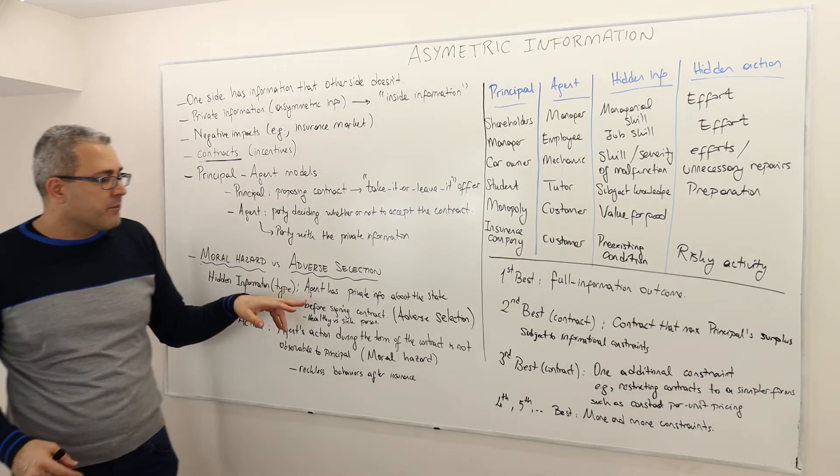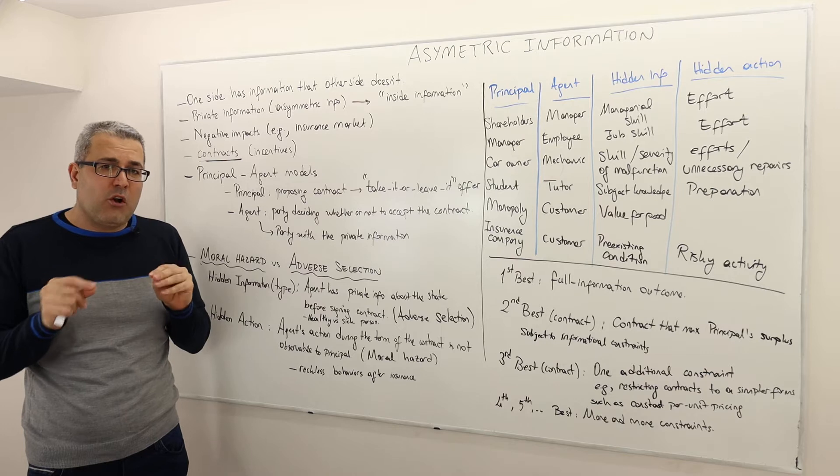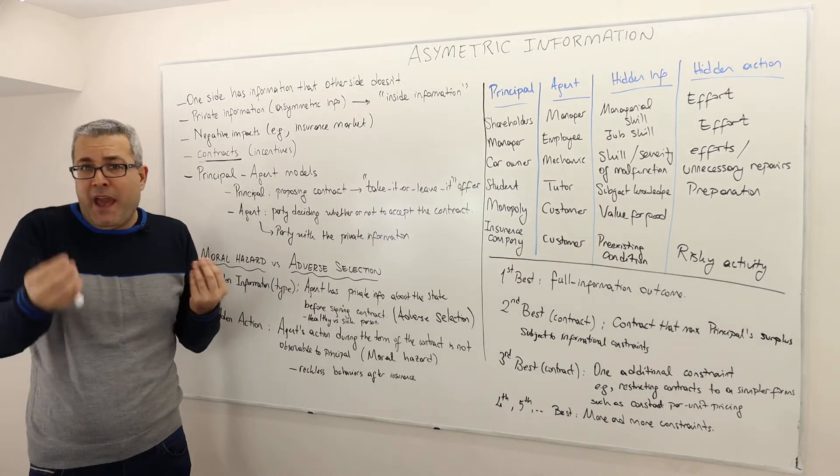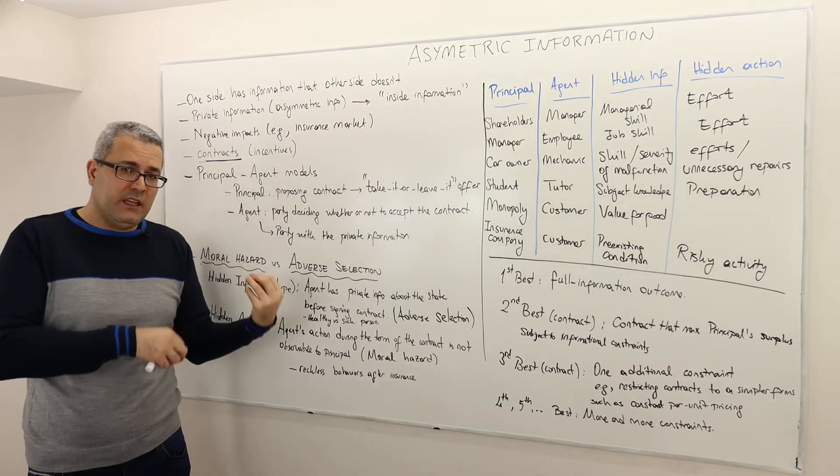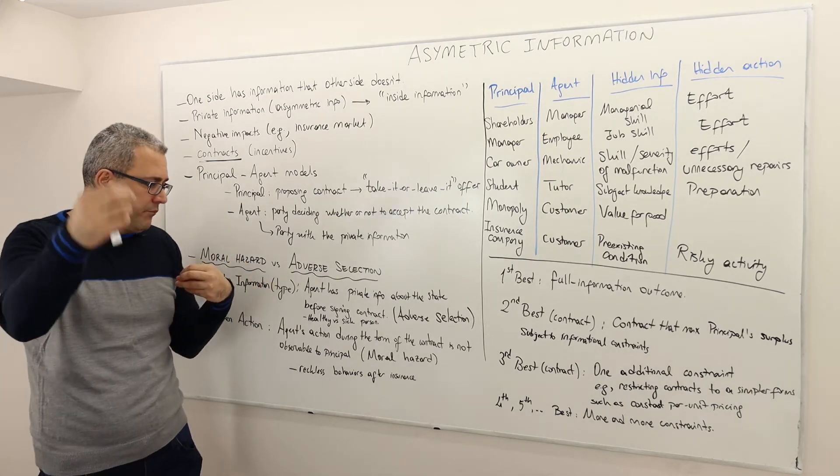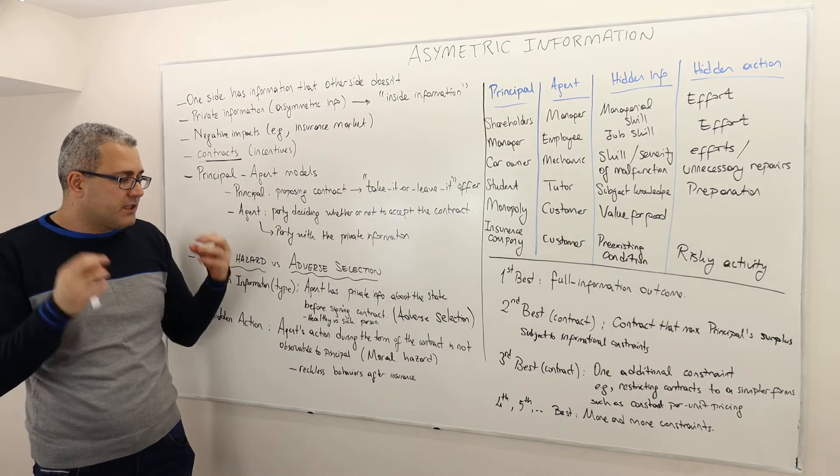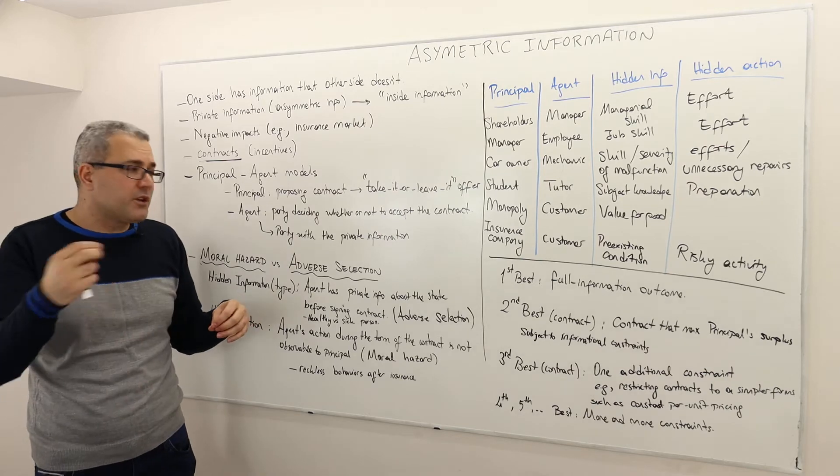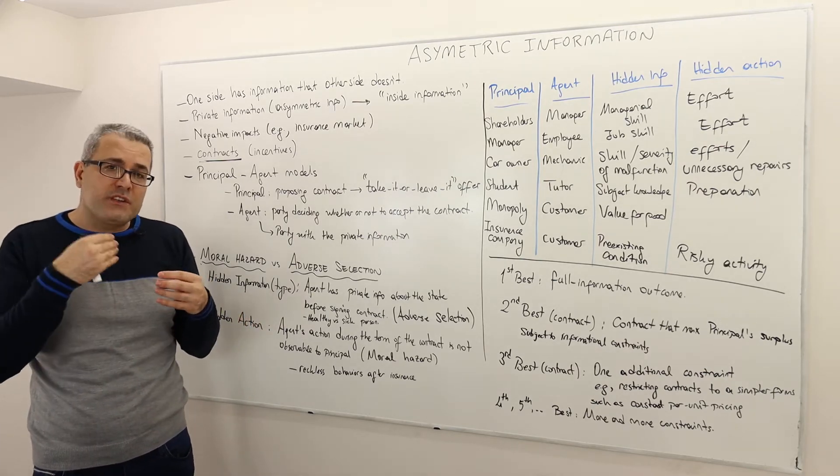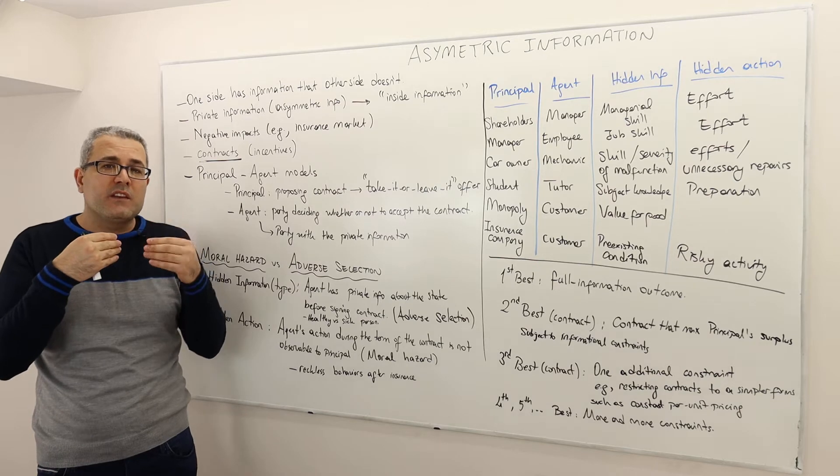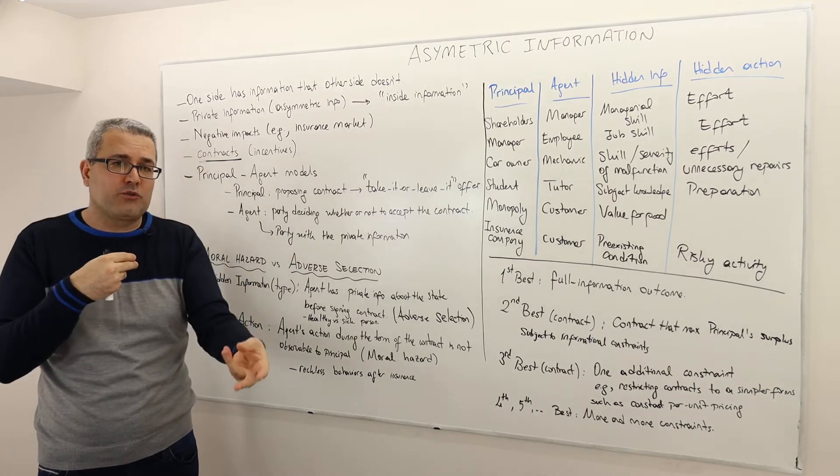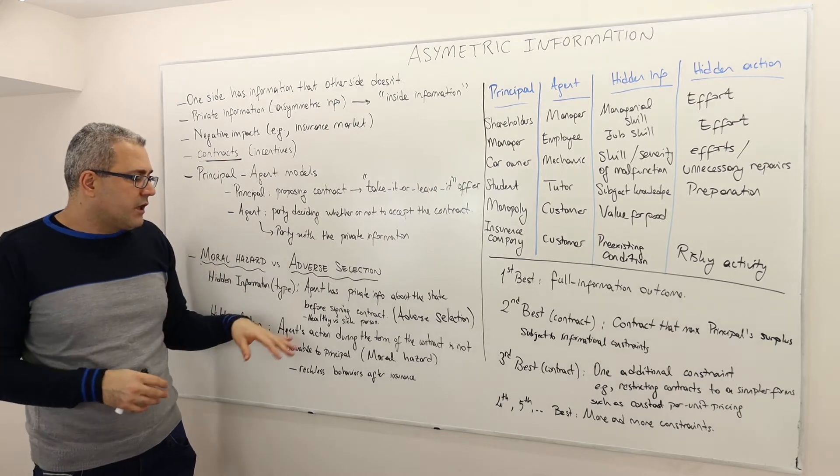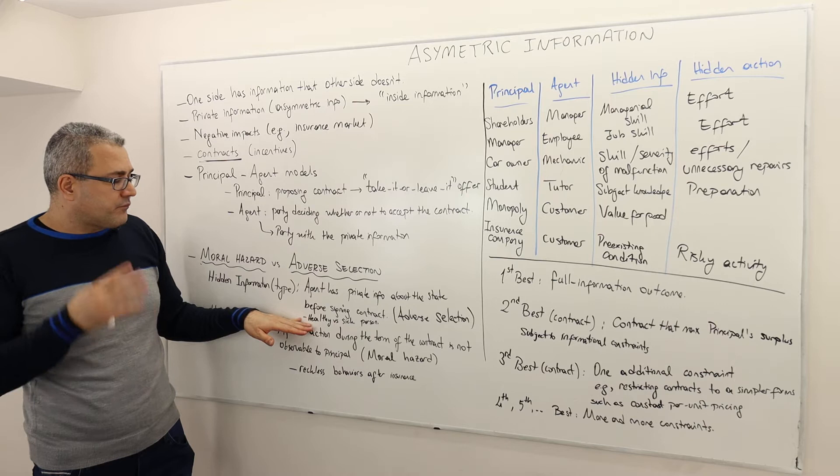The hidden information is the following: before signing the contract, agent has some private information that matters not only for the agent but also for the principal. The agent has private information about the true state of the world before signing the contract, and the insurance company obviously decides to offer an optimal contract without knowing this private information.